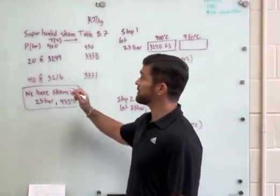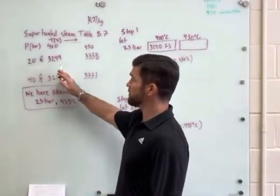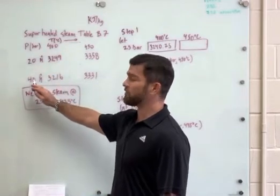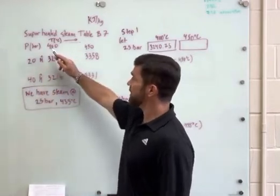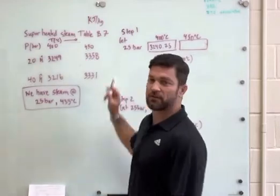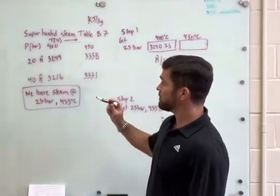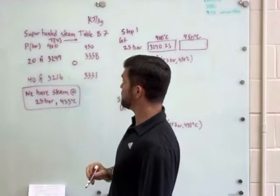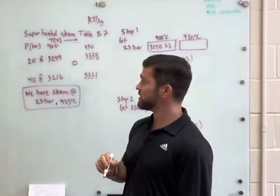So from the steam tables, we have values of enthalpies at either 20 bar or 40 bar, and then we have temperature increments of 400, 450, etc. So what we're looking for is what would be this value kind of somewhere around here.